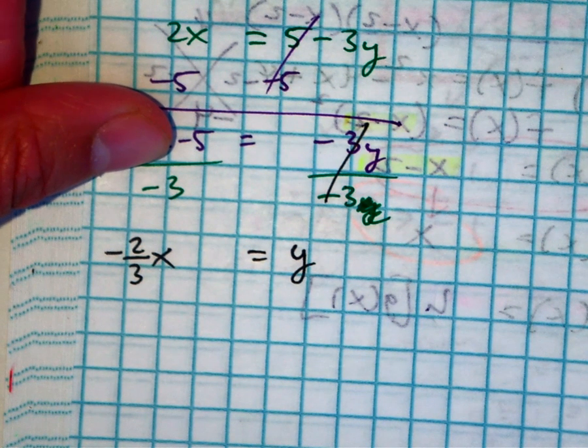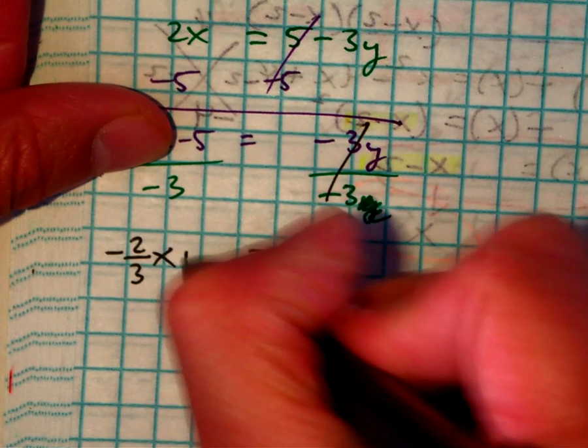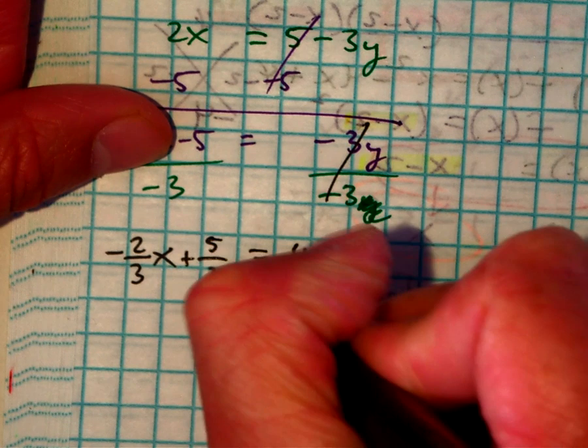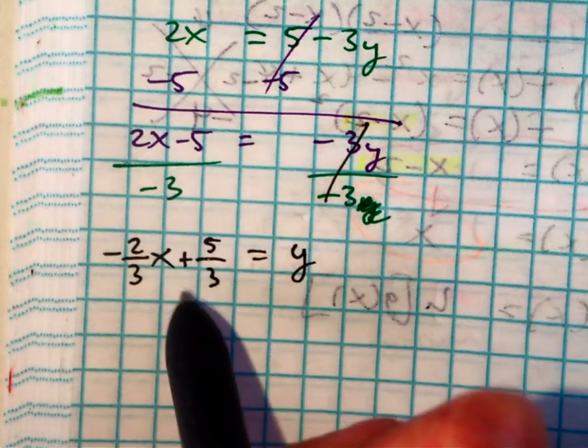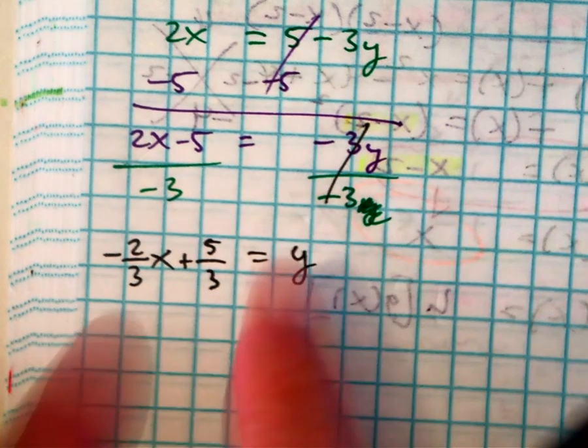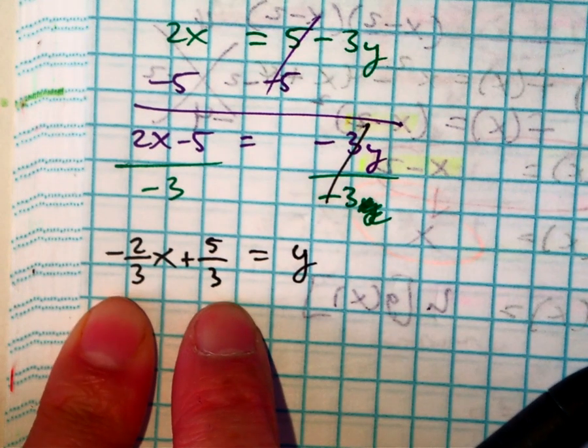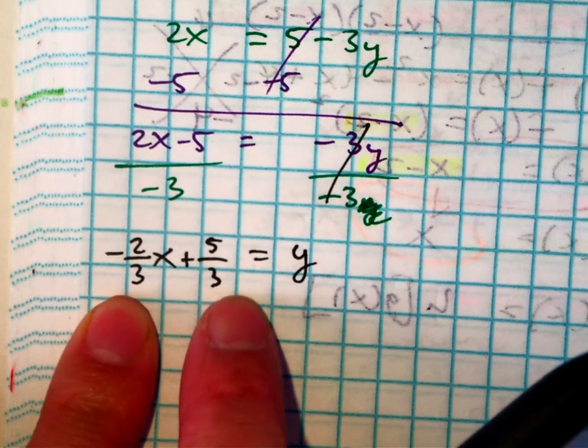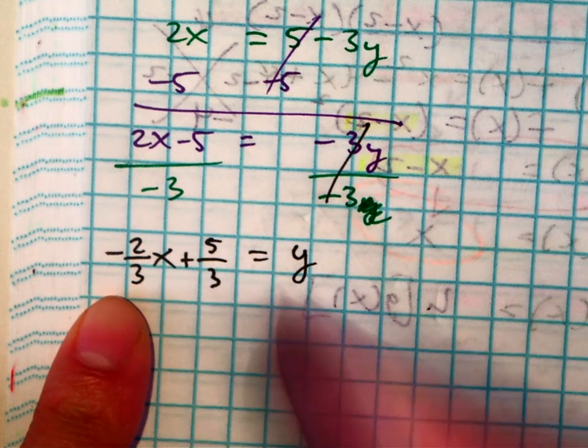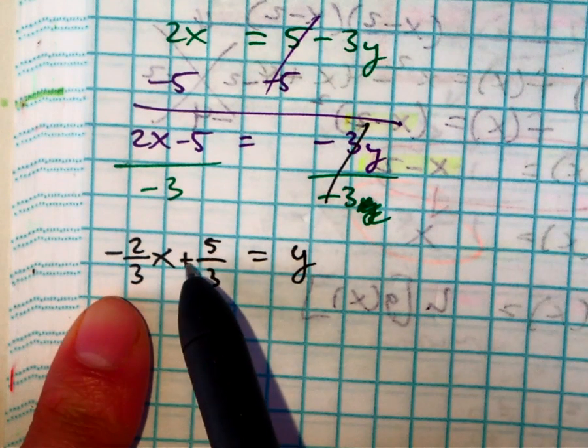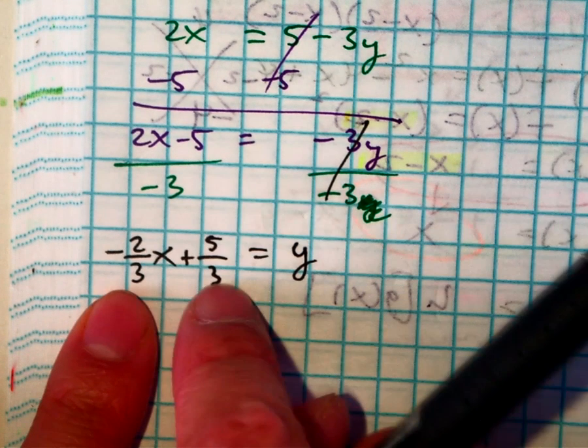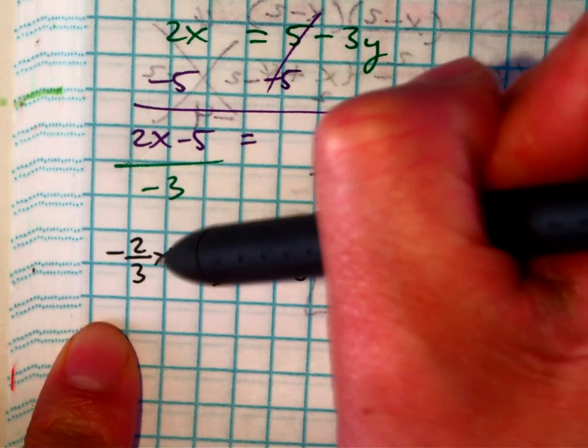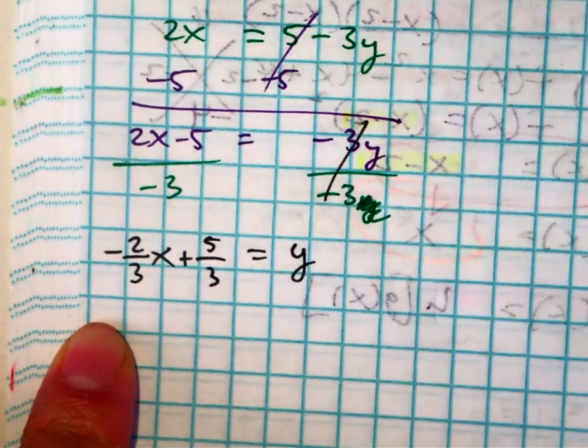And how about this one? Negative 5 divided by negative 3 is plus 5 thirds. Remember, to understand what we just did, it might help to go backwards. Because I have a common denominator, that could be like a negative, and then you would have negative 3. So, you're kind of combining them, common denominator, then you add the numerators. Negative 2x minus 5.